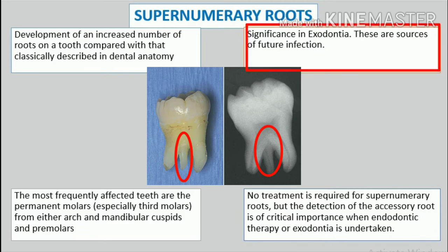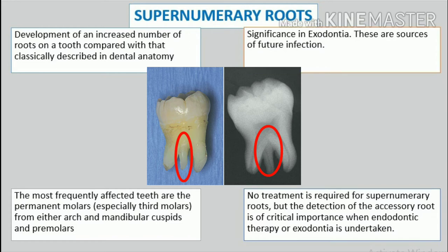This phenomenon is of considerable significance in exodontia, for one of these roots may be broken off during extraction and, if unrecognized and allowed to remain in the alveolus, may be the source of future infection.